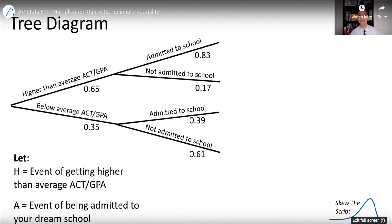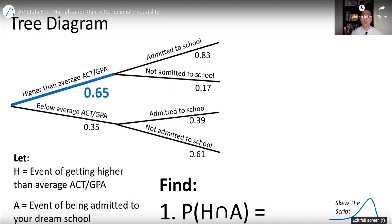So zoom in on this tree and talk about probabilities here. Let's let event H be the event of getting a higher than average ACT and GPA to let event A be the event of being admitted to your dream school. So let's find the probability of H and A, the probability of getting a higher than average GPA ACT and being admitted to your dream school. So in this case, we have to follow the top branch. We have a higher than average ACT GPA, so we need to find that probability, and then the top branch again, the probability of being admitted to the dream school.